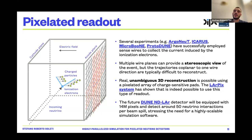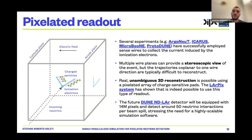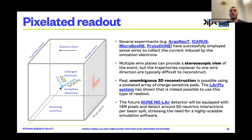The idea was to replace these wire planes with pixels. While previous experiments successfully employed sense wires to collect current from electrons, real and unambiguous 3D reconstruction is possible using only a pixelated array of charge-sensitive pads. An implementation of this system is called the LArPix system, which has shown it's possible to use this type of readout in a liquid argon TPC. Instead of wire planes, you now have a pixel plane and reconstructing the three-dimensional event becomes much easier.